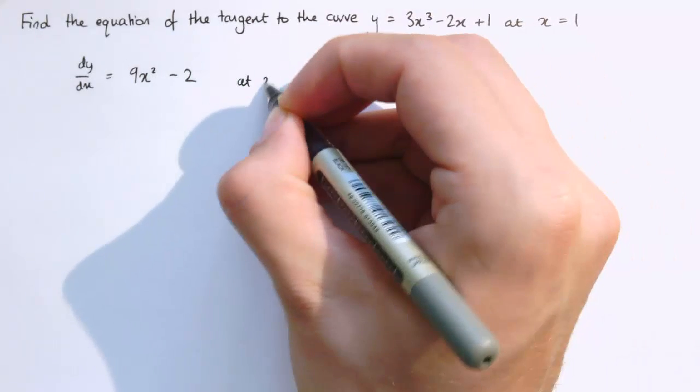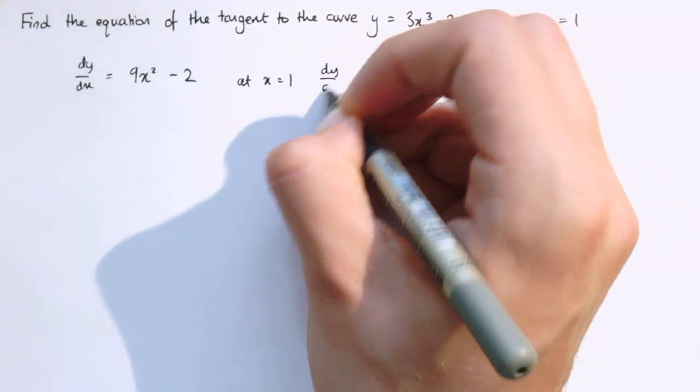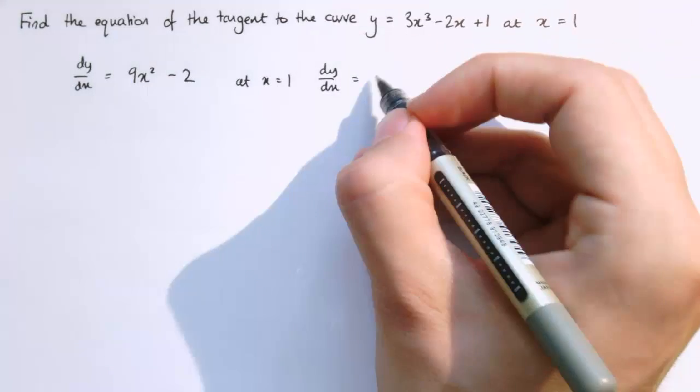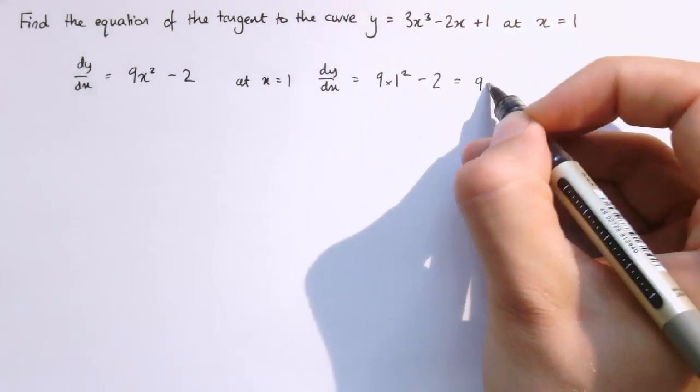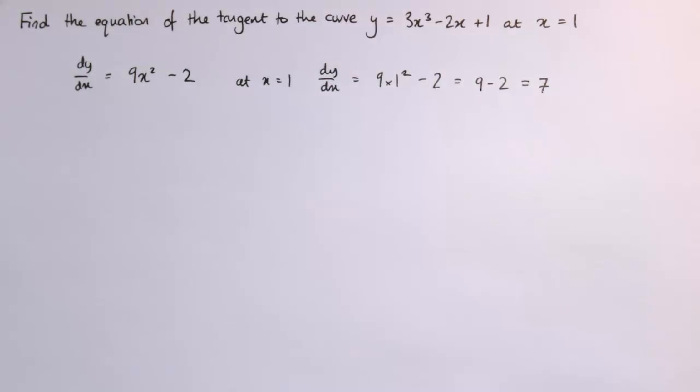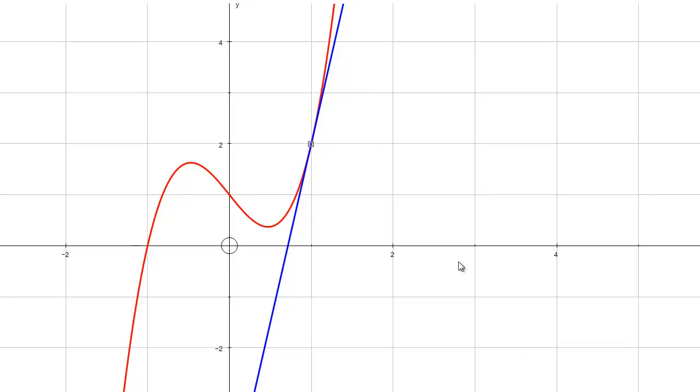At x equals 1, dy/dx equals 9 times 1² minus 2, which is 9 minus 2, which is 7. So the gradient of this tangent is 7.